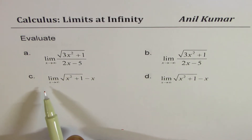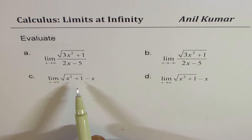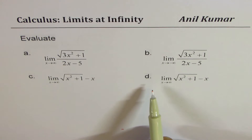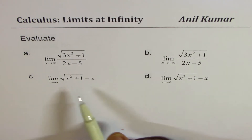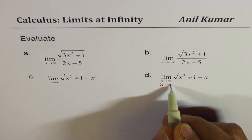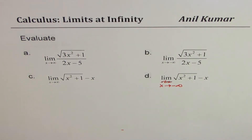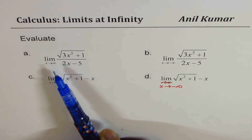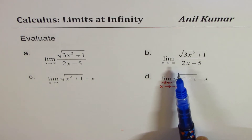Example C is the limit as x approaches infinity for square root of x squared plus 1 minus x, and Example D is the limit of the same function but when x approaches minus infinity. So we have two very similar questions — the only difference is whether we find the limit as x approaches positive infinity or negative infinity.